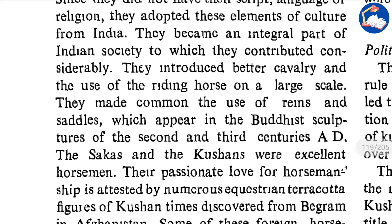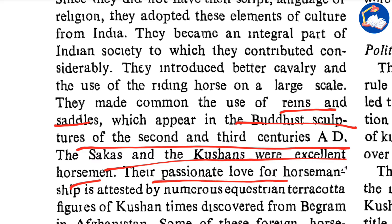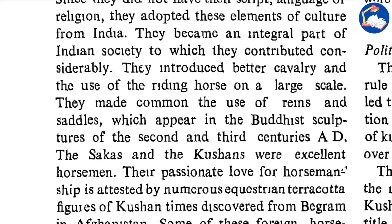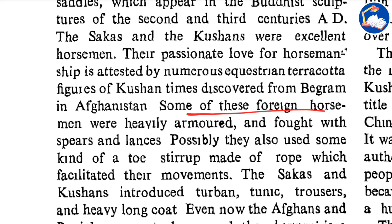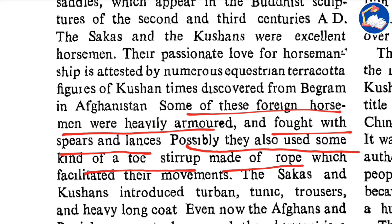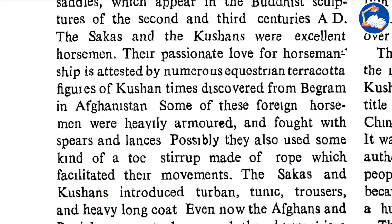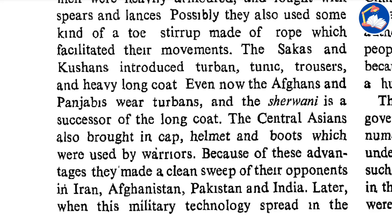They made common the use of reins and sandals, which appear in the Buddhist sculptures of the second and third century AD. The Sakas and Kushans were excellent horsemen — their passionate love for horsemanship is attested by numerous equestrian terracotta figures from Kushan times discovered from Begram in Afghanistan. Some of these foreign horsemen were heavily armored and fought with spears and lances, possibly also using some kind of toe stirrup made of rope. The Sakas and Kushans introduced the turban, tunic, trousers and heavy long coat — even now Afghans and Punjabis wear turbans and the sherwani, which are contributions of the Sakas and Kushans.